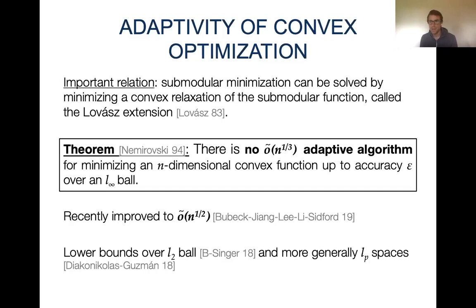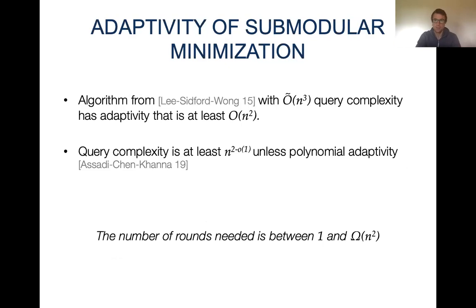So we have these two related areas — submodular maximization and convex optimization — with very different results for adaptivity. For submodular maximization we can get exponential speedups using parallelization, whereas for convex optimization we cannot get algorithms with subpolynomial adaptivity. For submodular minimization, very little is actually known about adaptivity.